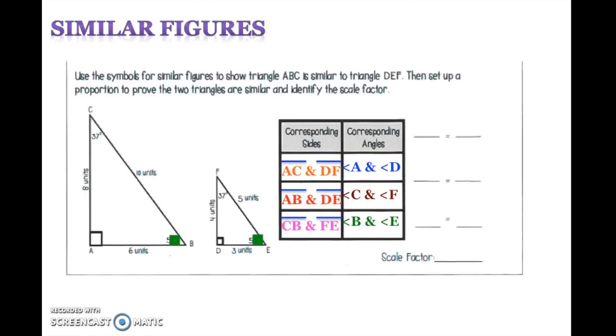Okay, let's go ahead and set up our scale factor to determine if our triangles are similar. First, we are going to look at AC, line AC and DF. Set up our proportion. So AC is 8 and DF is 4. We simplify, leaving us with 2.